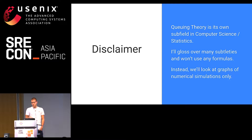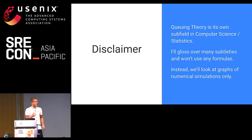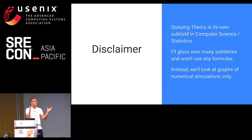A quick disclaimer: I'm going to talk about a thing called queuing theory, which is essentially its own subfield in computer science or statistics. For those who have spent a lot of time with this, I'll gloss over a lot of the subtleties and I'll not use any formulas because that tends to lose the audience. Instead, the approach I'll be taking is I'll only do numerical simulations and look at graphs. So if I want to find out what happens to the 99th percentile of requests, I'll just do 10,000 runs and figure out where the 99th percentile is instead of calculating it accurately.